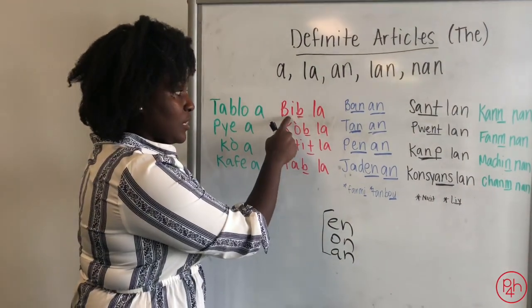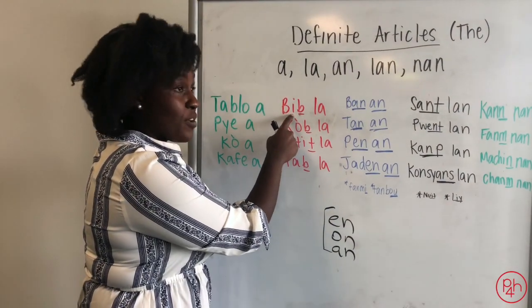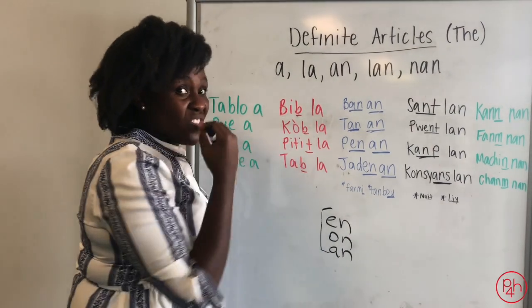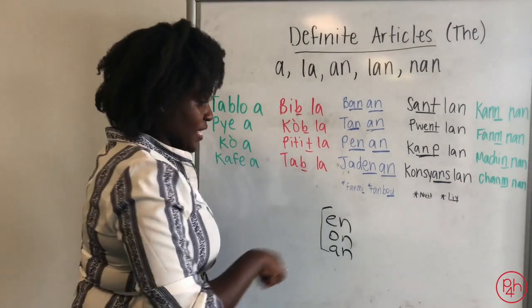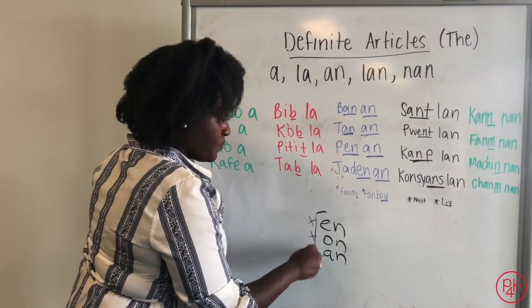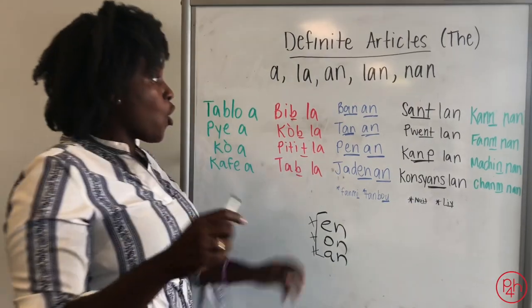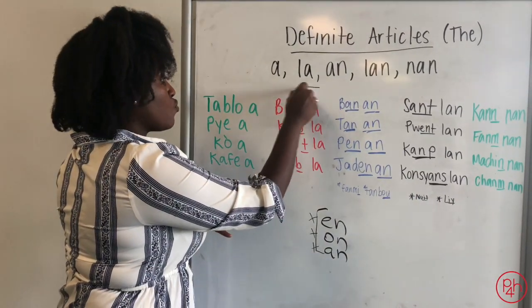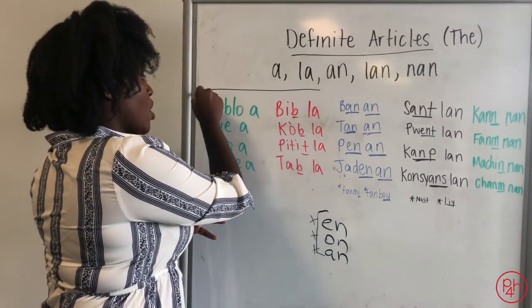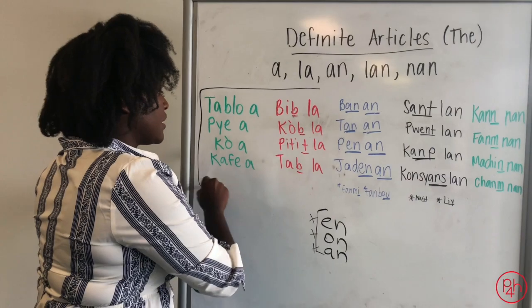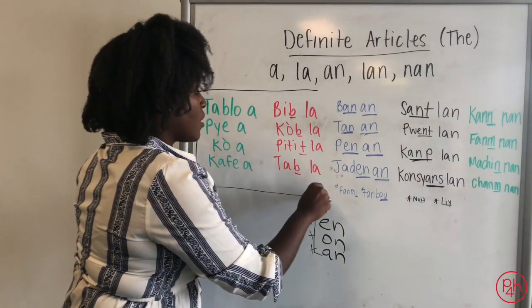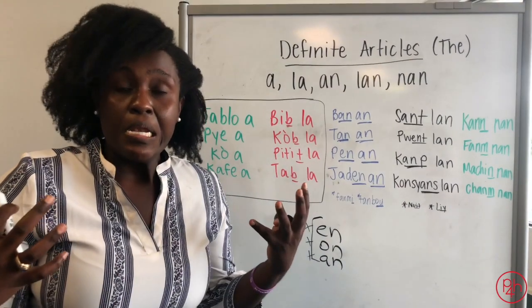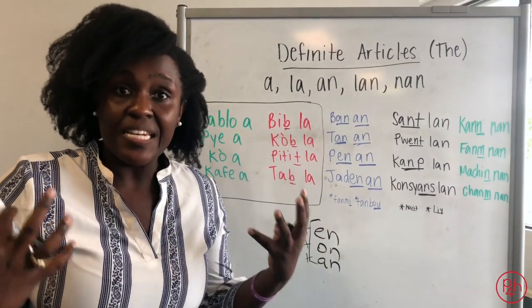The letter right before the consonant is a vowel, but it's a non-nasal vowel — not one of those nasal vowels. So these words are dealing with non-nasal endings.